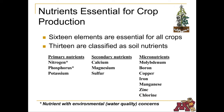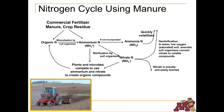Manure is a good source of primary, secondary, and micronutrients. To understand the impact animals and crops have on the environment, it's important to know how nutrients travel through the environment.